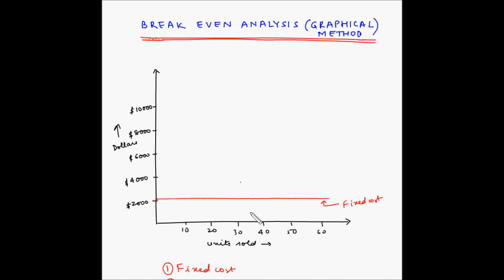So what this line means is that the fixed cost is $2,000 whether the number of units sold is 5, 10, 15, 20, or any other number of units sold.